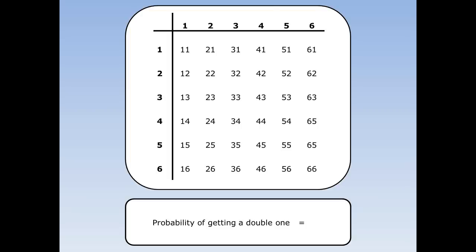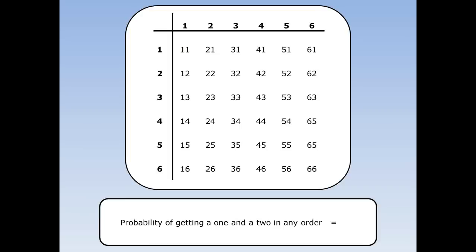What's the probability of getting a double one when I throw two dice? Well there's only one place this happens out of 36. So the chance is one out of 36. What's the probability of getting a one and a two in any order? There are two places this happens. I could get a one and a two or a two and a one. There are 36 things that could happen, so the chance is two out of 36.